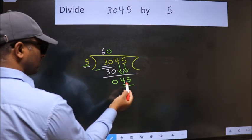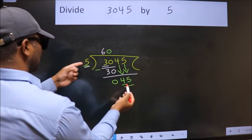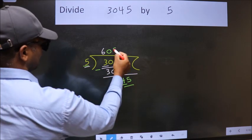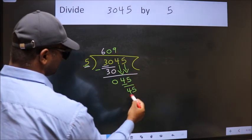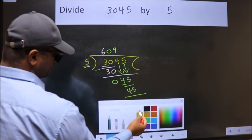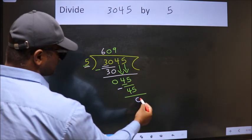When do we get 45? In 5 table. 5, 9 is 45. Now we subtract. We get 0.